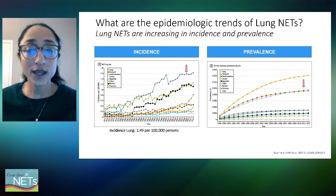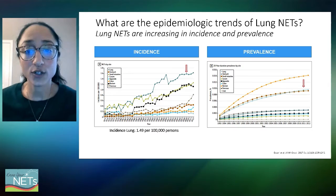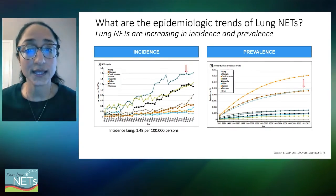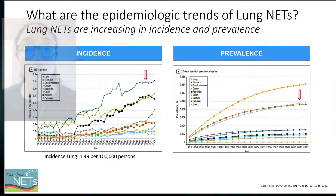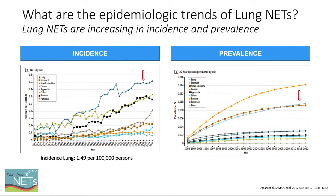So what are the epidemiologic trends of lung neuroendocrine tumors? Lung neuroendocrine tumors are the fastest rising neuroendocrine tumor in incidence, and also in the top three of neuroendocrine tumors in terms of prevalence.